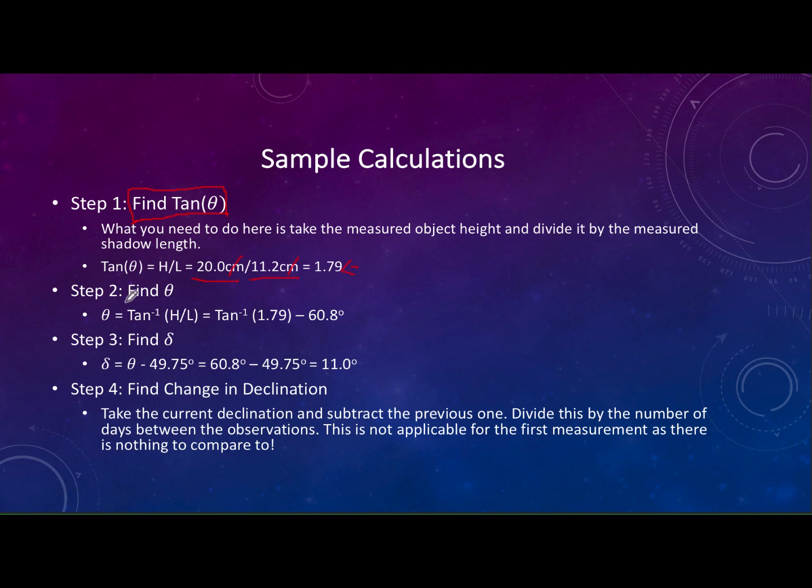Now once you find that, now you want to find theta. Theta is the altitude of the Sun. So we want to find out how high the Sun was in the sky. This is the one where you need to take the trig function, you need to take what is called the inverse tangent. So you take the number that you got here which was 1.79 and you're going to take the inverse tangent function. In this case you would take the inverse tangent and you would find that equals 60.8 degrees. So how high was the Sun on this day? Its altitude was 60.8 degrees.